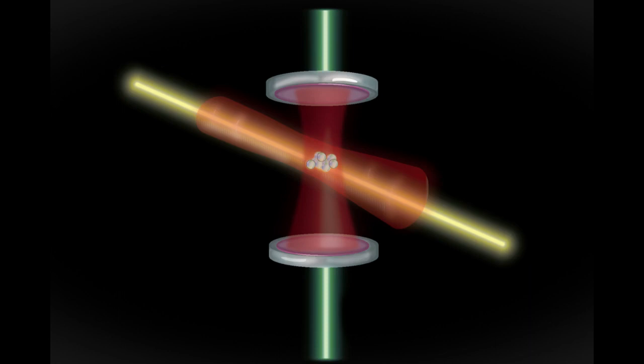If atomic clocks could more accurately measure atomic vibrations, they would be sensitive enough to detect phenomena such as dark matter and gravitational waves.